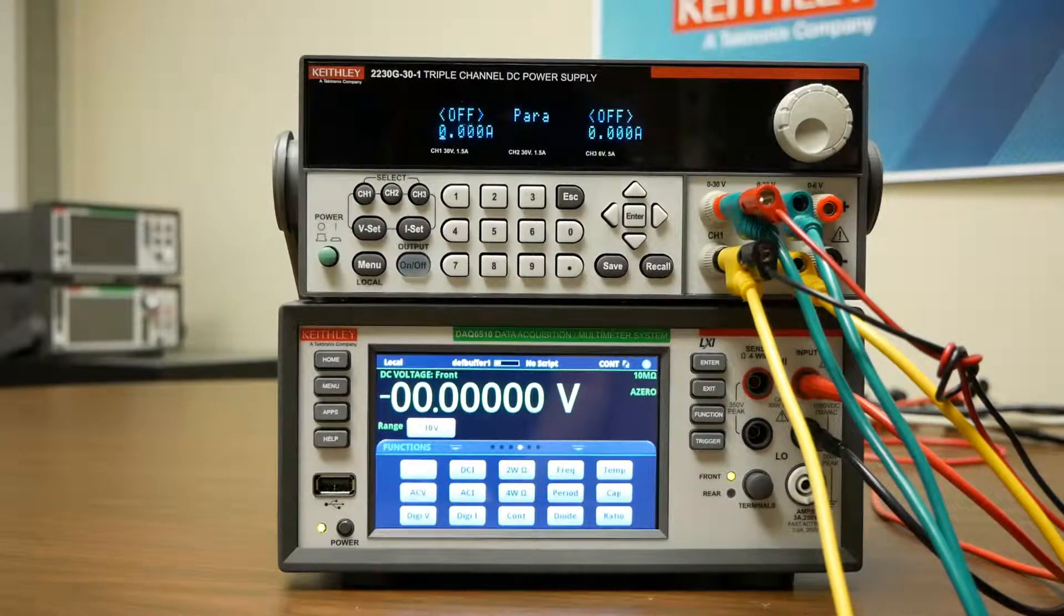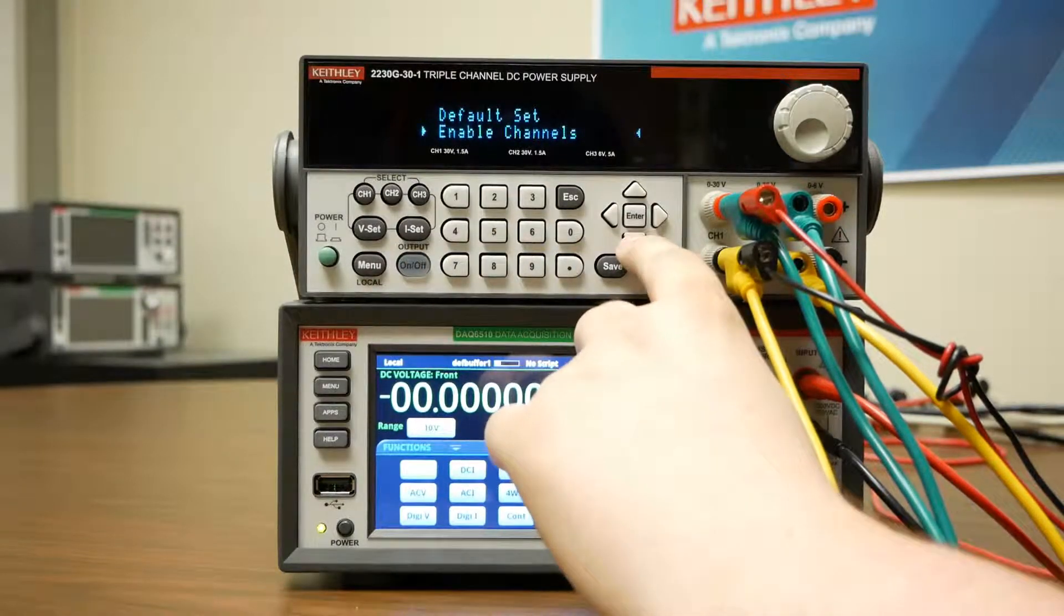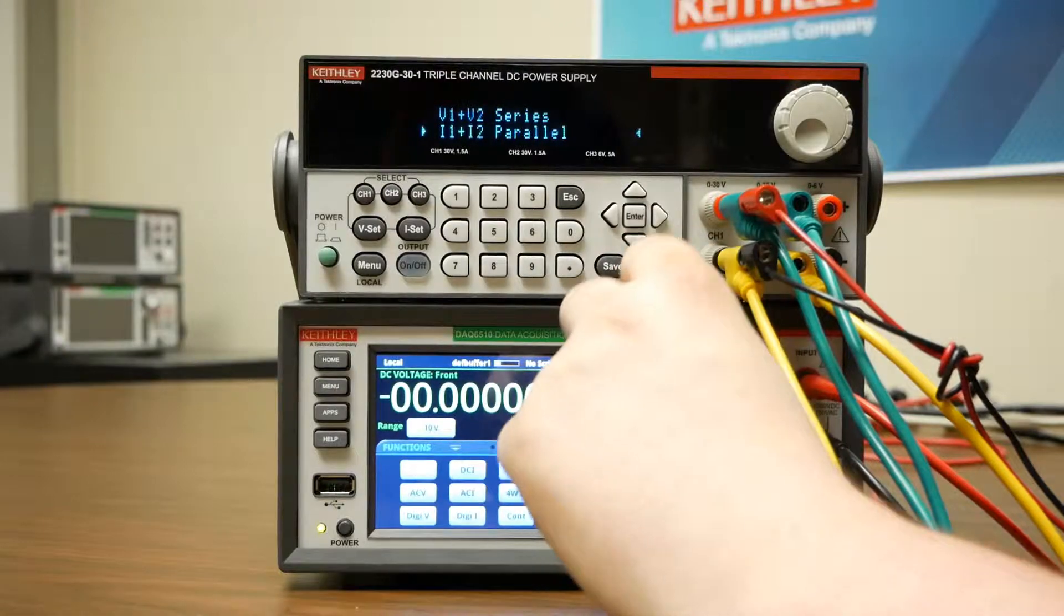Now to configure the front panel settings, we'll go to the menu button, key down until we're at combined channel 1 and channel 2, press enter,